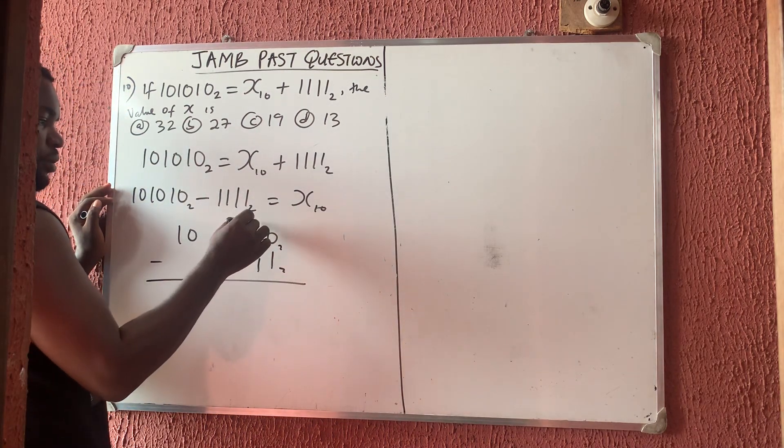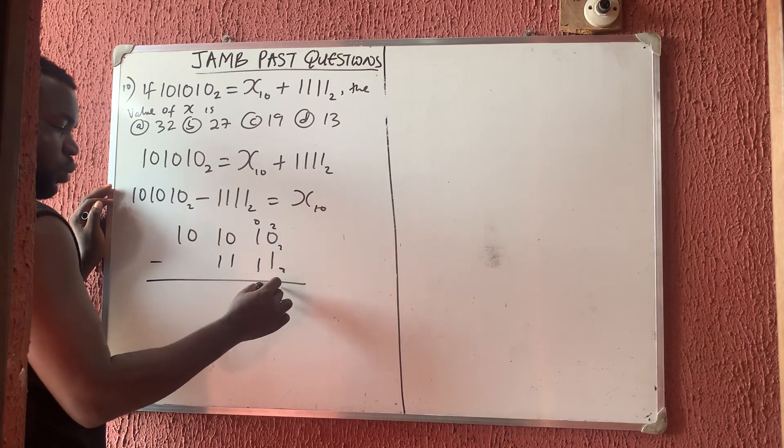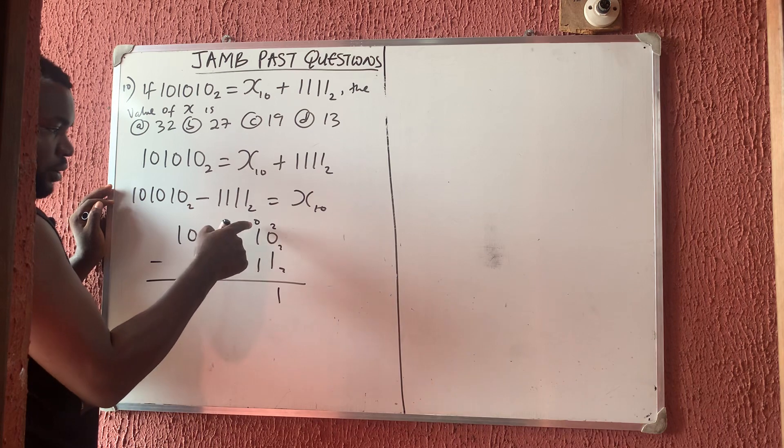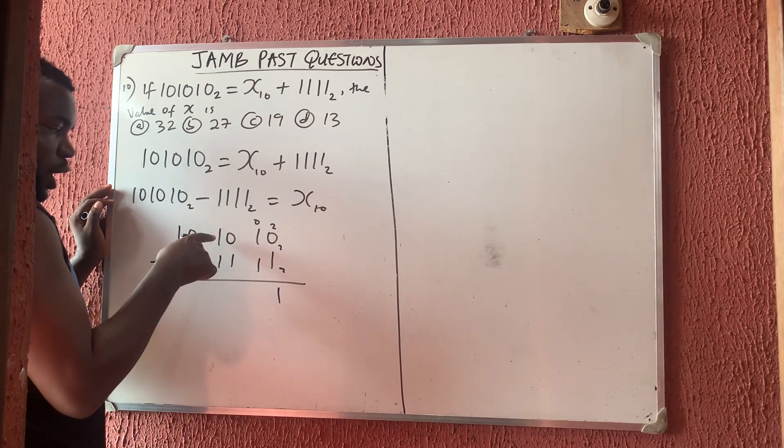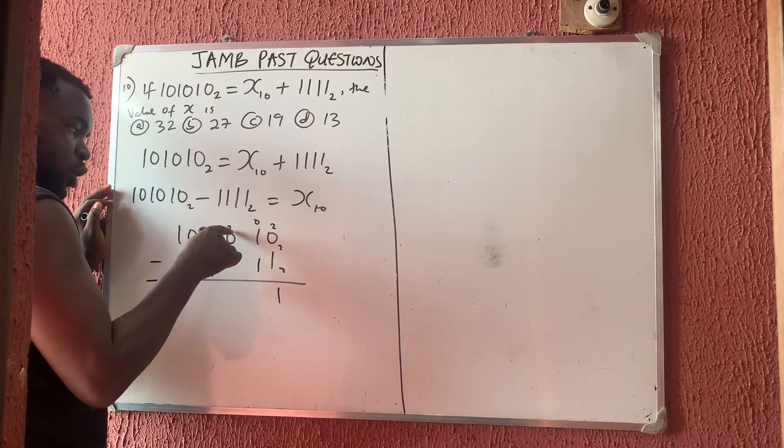I'll borrow one from here. Zero is many here, call it 2. 2 minus this will give you 1. So now 0 minus this cannot go. I'll borrow one from here. I cannot borrow here, borrow one from here. Call it 2, put it here 2. Now borrow one from that 2, call it 2 again, put it here 2. Don't forget that here is now 1. So 2 minus 1 will give you 1.